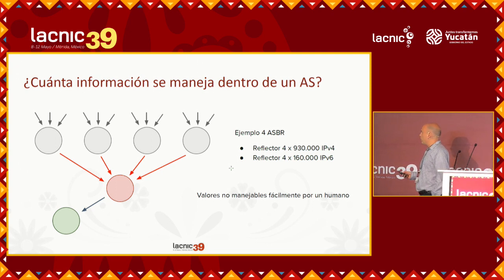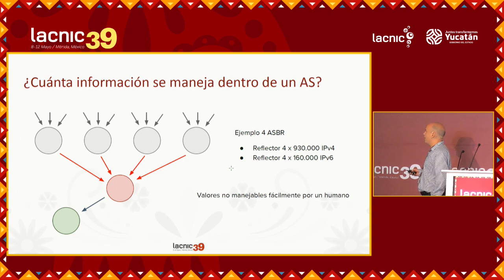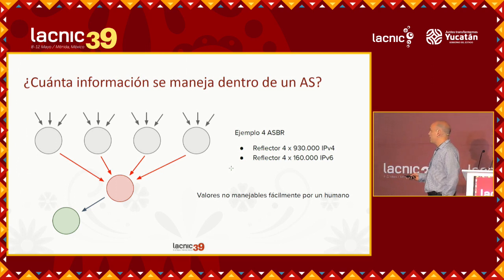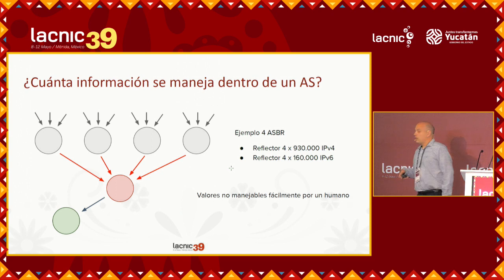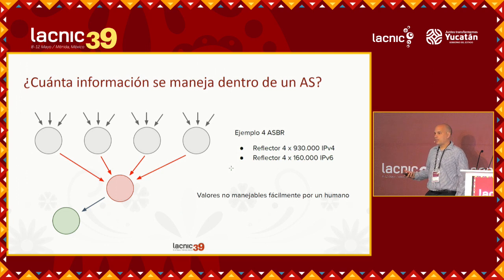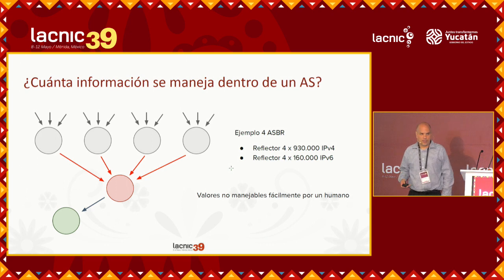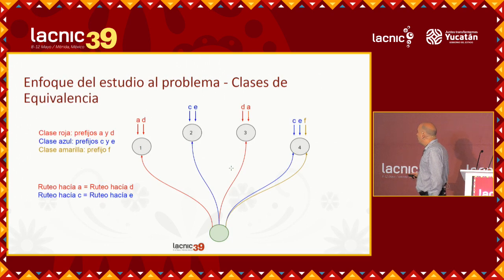In that case, what we have is that for each of the routers that learns all this information and then propagates it, we will have a multiplication of the number of routes times the number of routers. In the case of this slide, we have four routers that learn the global routing table, which means we have more than 4 million routes — a very large amount of information, not manageable for an individual when analyzing a network problem.